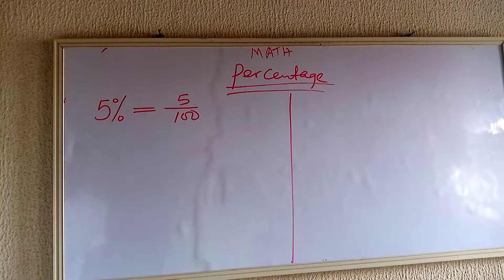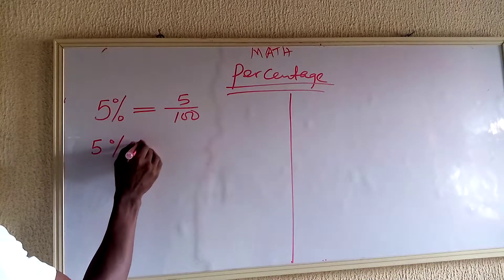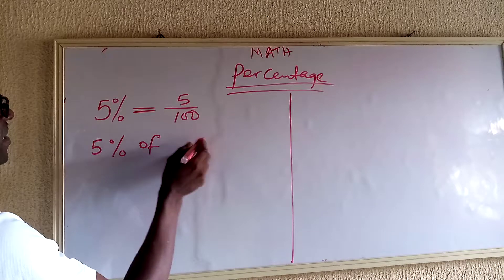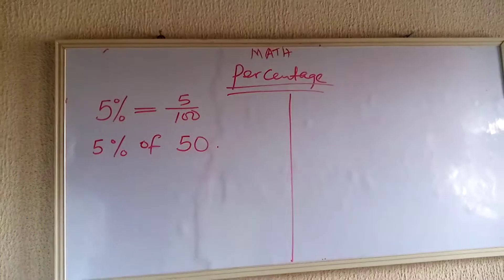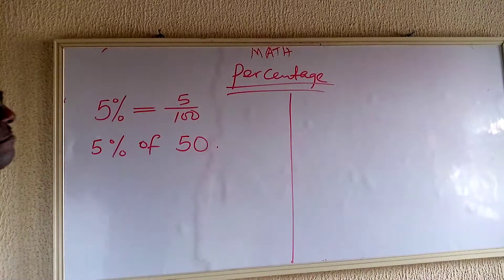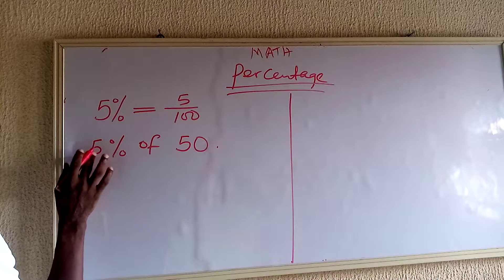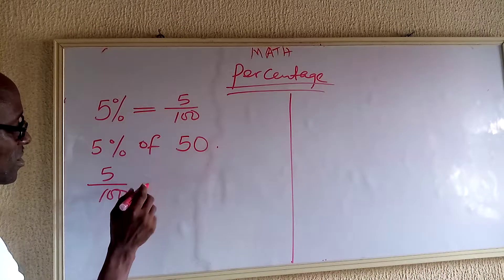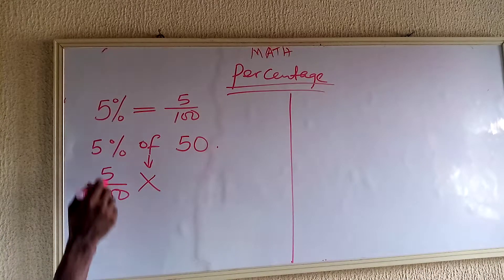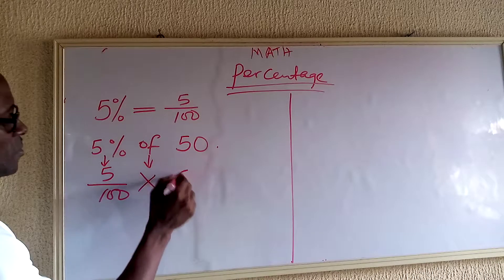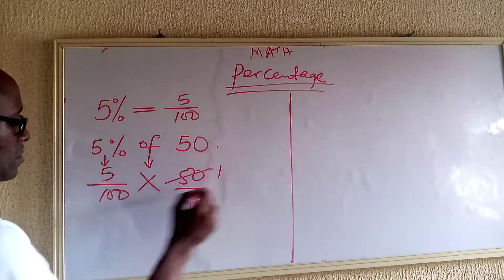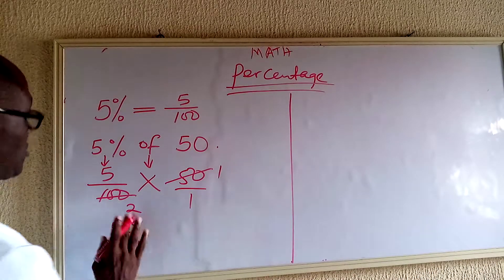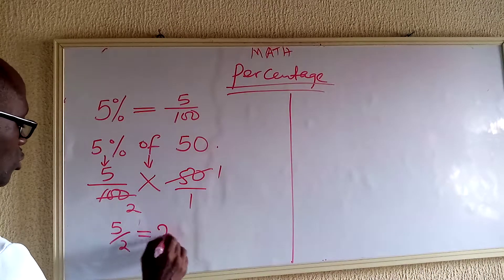Now, if I say 25% of 50 — look at this. I want to interpret this: 5% of 50. It means 5 over 100, and 'of' means multiplication. So 5 over 100 times 50 over 1 gives us 5 over 2, which is equal to 2.5.